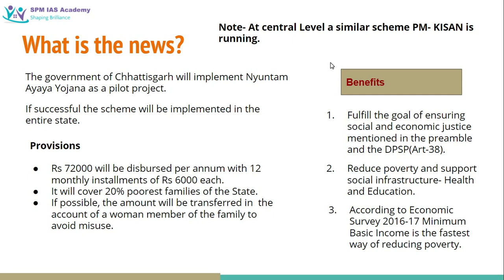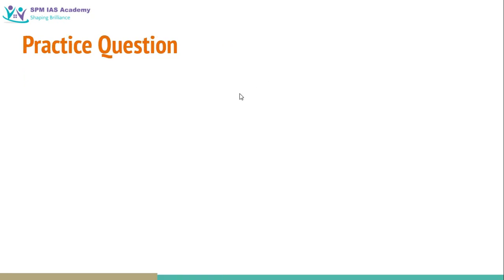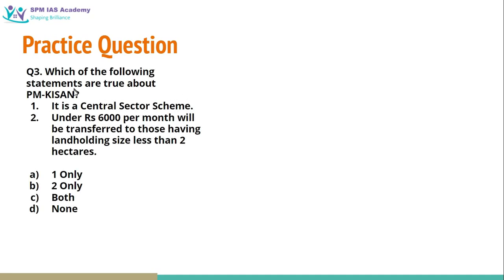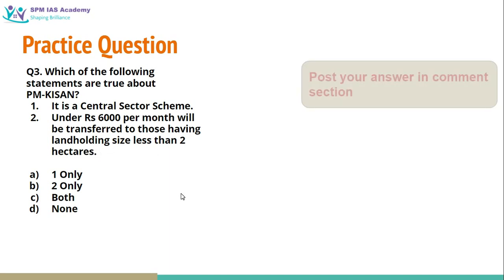At the central level, a similar scheme like PM Kisan is already running, but it is for a specific segment — those people having a land size less than two hectares and those who are involved in agriculture practice. A practice question: which of the following statements are true about PM Kisan scheme — it is a central sector scheme, and under the scheme rupees 6,000 per month will be transferred to those having a land holding size less than two hectares? You can post your answer in the comment section.